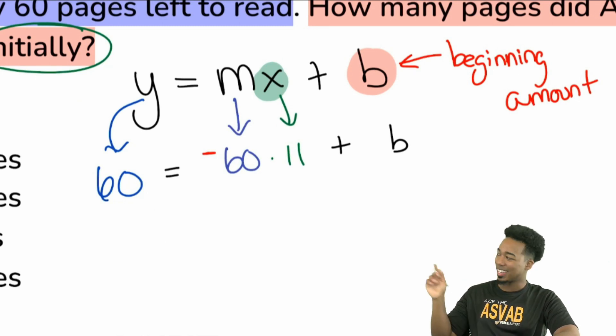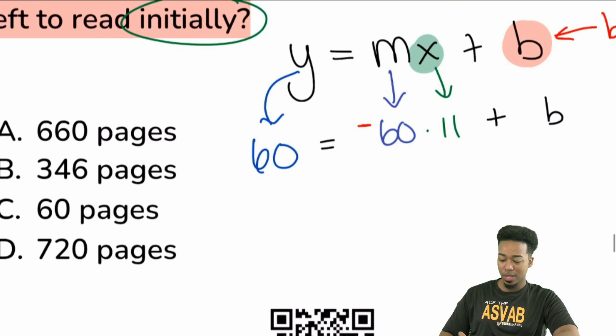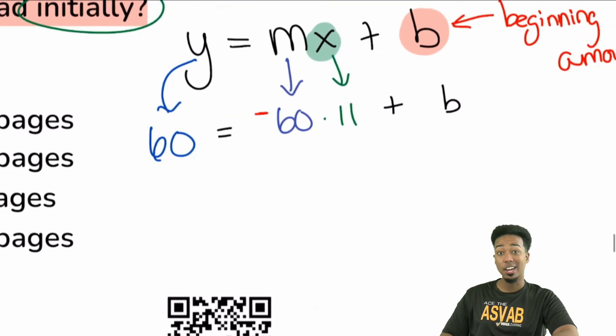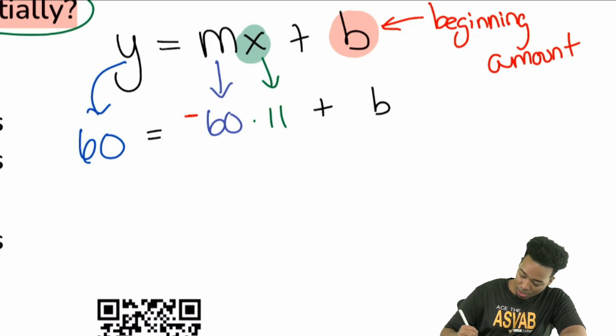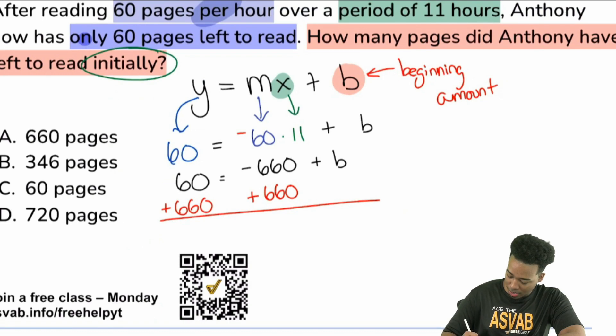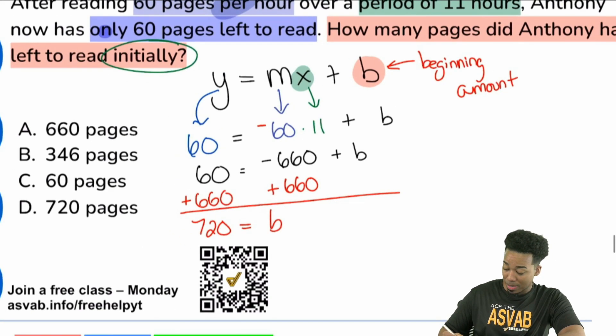Because if you didn't put that negative in there, I can guarantee you that you may have gotten a different answer that isn't even actually there. So here we go. Negative 60 times 11 would give us negative 660. So that was actually not terrible because now what we're going to do is we're going to add 660 to both sides. And once we do that, boom, we see that we're going to have 720 equals B.